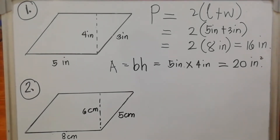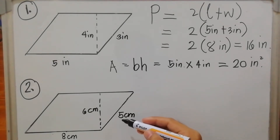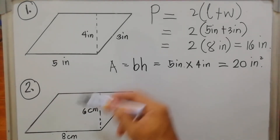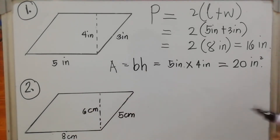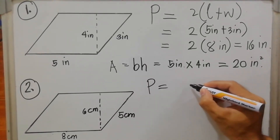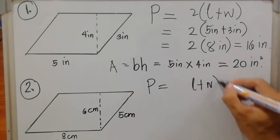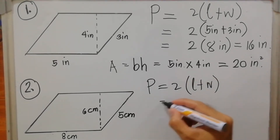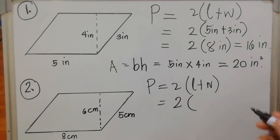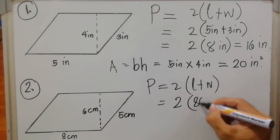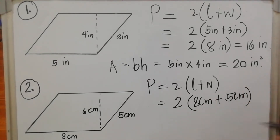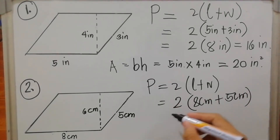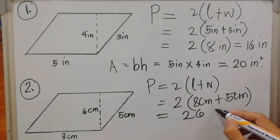For example number two, we have eight centimeters and five centimeters as the measurements of the sides. A parallelogram has four sides with opposite sides congruent, so the sides are 8 cm, 8 cm, 5 cm, and 5 cm. Perimeter = (8 + 5) × 2 = 13 × 2 = 26 centimeters.